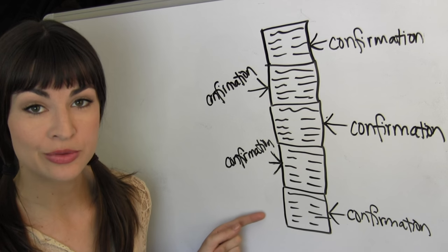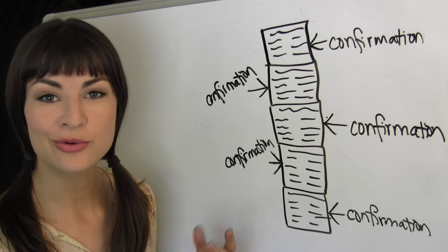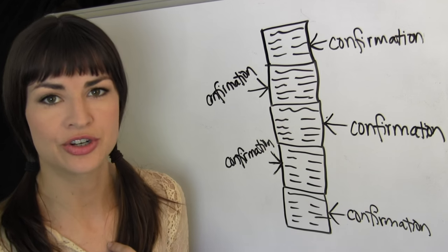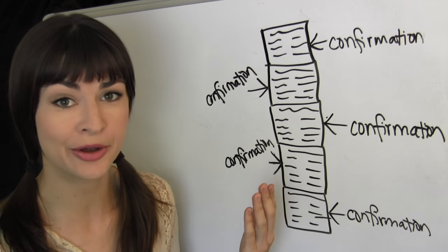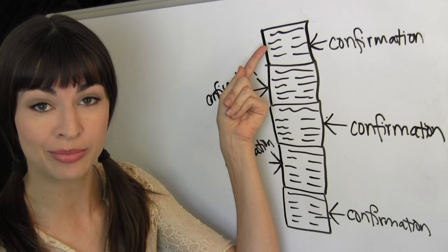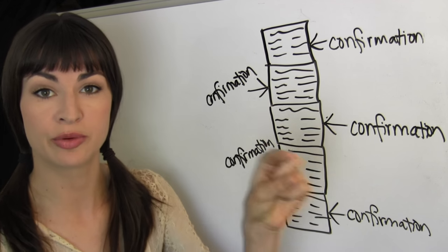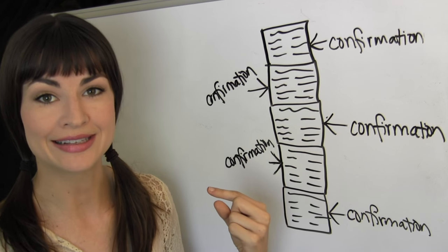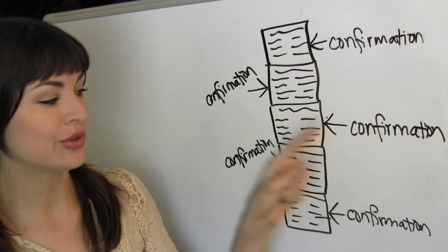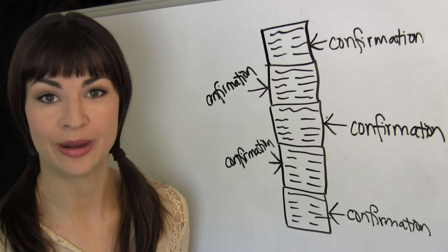That's why each block that is found after your wallet has broadcast your transaction is called a confirmation. So if this was the most recent block found, and you sent me half a dash, say, oh, 20-30 minutes ago, when it was recorded in that block, we would say that your transaction of half a dash from you to me now has one, two, three, four, five confirmations.